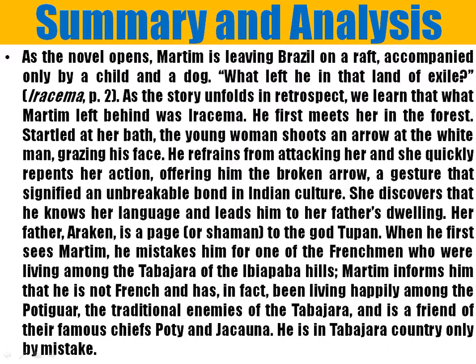The story unfolds in retrospect, in the form of a flashback, telling us what happened before Martin had to travel with the son of Iracema. Towards the beginning of the novel, the young woman Iracema shot an arrow at a white man. That white man turned out to be Martin, and he refrained from attacking her. She quickly repented of her action, as Martin was part of the enemies of the Tabajara nation and Iracema's father was not comfortable with the relationship.